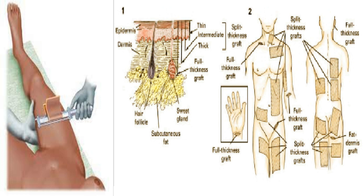Skin grafts can be categorized as split thickness or full thickness. Full thickness skin grafts (FTSGs) remove all layers of the skin and create a secondary defect at the donor site, which must be closed primarily or left open to heal secondarily. For this reason, FTSGs are not frequently used for large defects.